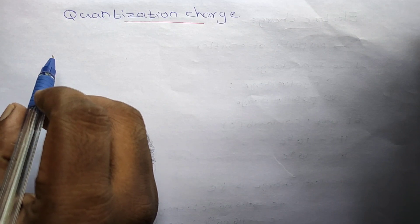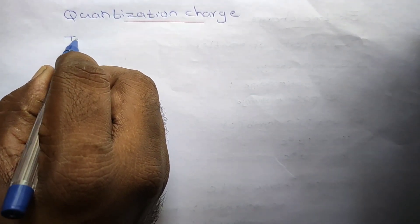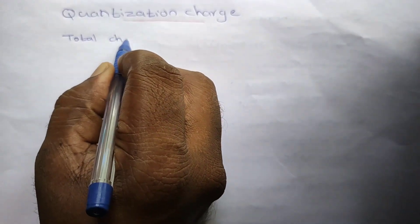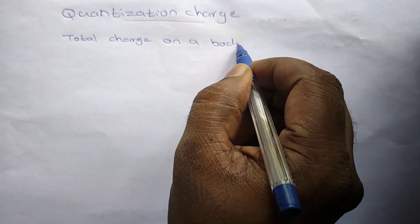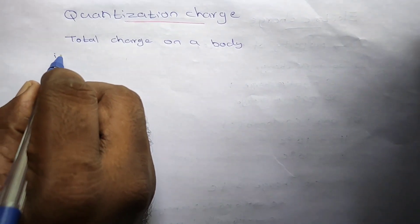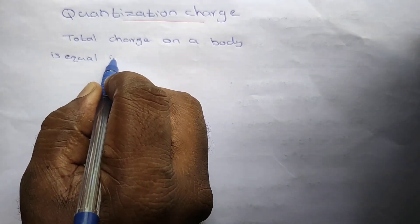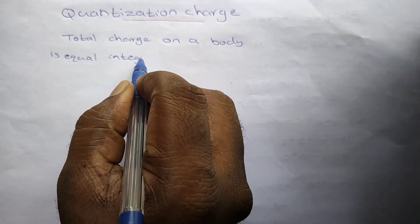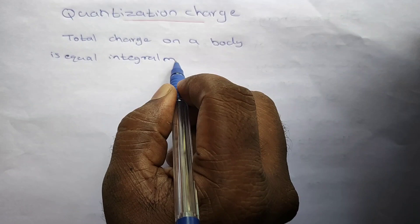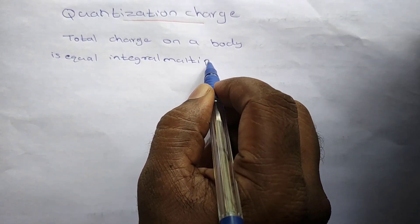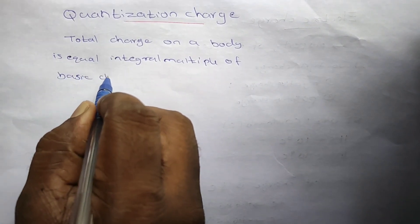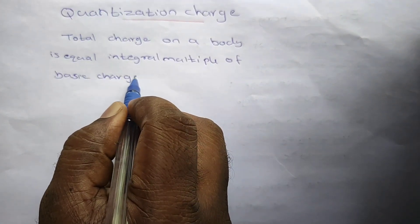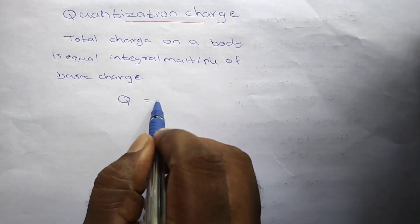What is meant by quantization of charge or the quantization principle? The total charge on a body is equal to an integral multiple of the basic charge. That means Q is equal to ne.